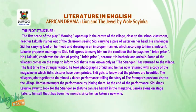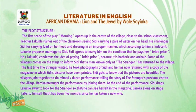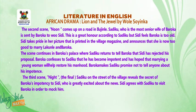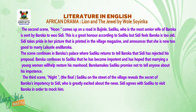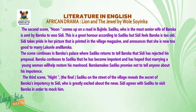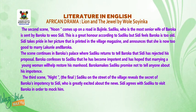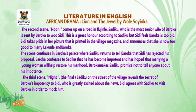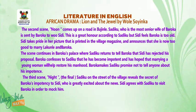Baroka, alone on stage, talks to himself that it has been five months since he has taken a new wife. The second scene, noon, takes place on a road in Ilujinle. Sadiku, who is the most senior wife of Baroka, is sent by Baroka to woo Sidi. This is considered a great honor, but Sidi feels Baroka is too old. Sidi takes pride in her picture printed in the magazine and announces she is now too good to marry either Lakunle or Baroka. The scene continues in Baroka's palace, where Sadiku returns to tell Baroka that Sidi has rejected his proposal.